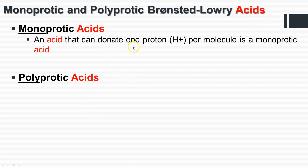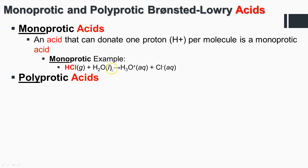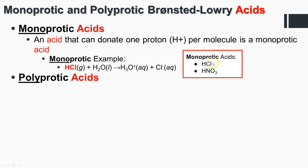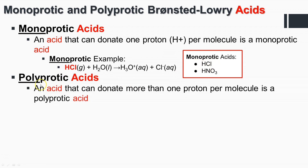A monoprotic acid is one that can donate one proton per molecule. For example, HCl plus water — there is one proton donated to solution to make the hydronium ion. Monoprotic acids include HCl and HNO3 — hydrochloric acid and nitric acid. A polyprotic acid, on the other hand, donates more than one proton per molecule.